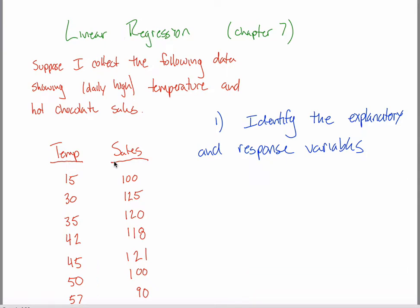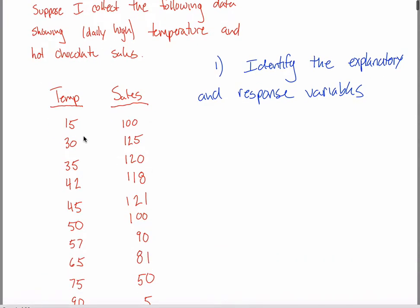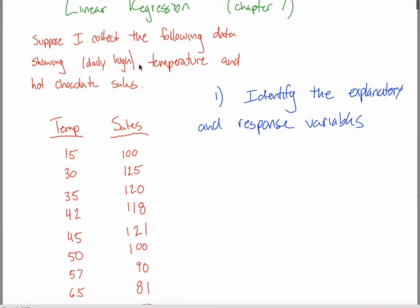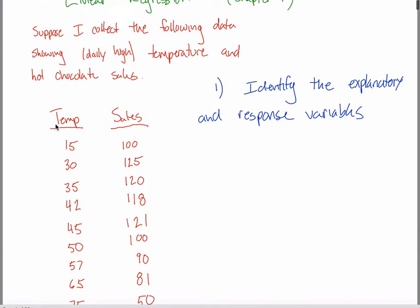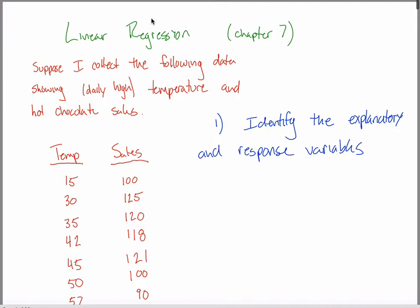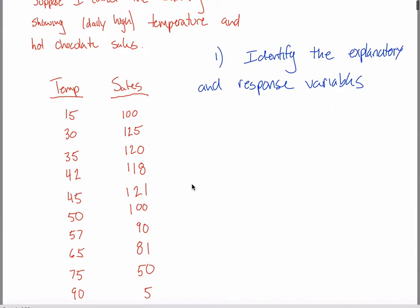You're going to use linear regression when you have two different data sets and you're trying to study the connection between those two data sets. In this example, there's a hot chocolate stand and some kids selling hot chocolate. I'm tracking how many cups of hot chocolate are sold each day and also tracking the temperature each day, because maybe when it's really hot out people don't want to buy a lot of hot chocolate, but when it's colder out maybe they do. Studying the relationship between two variables like that is exactly what linear regression is made for — it's a scientific way of studying the relationship between two variables.